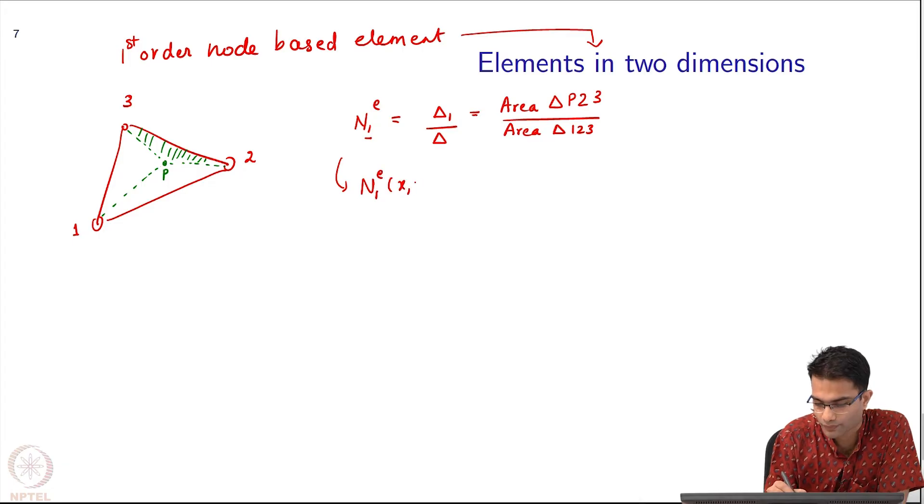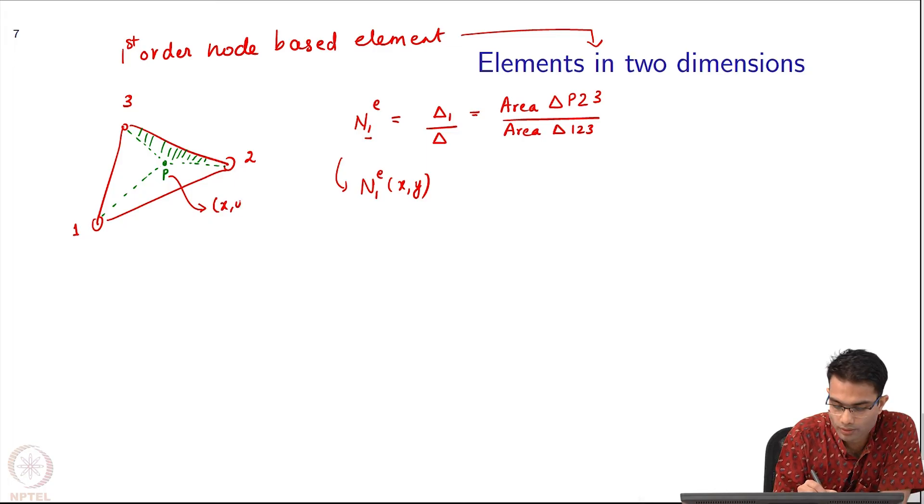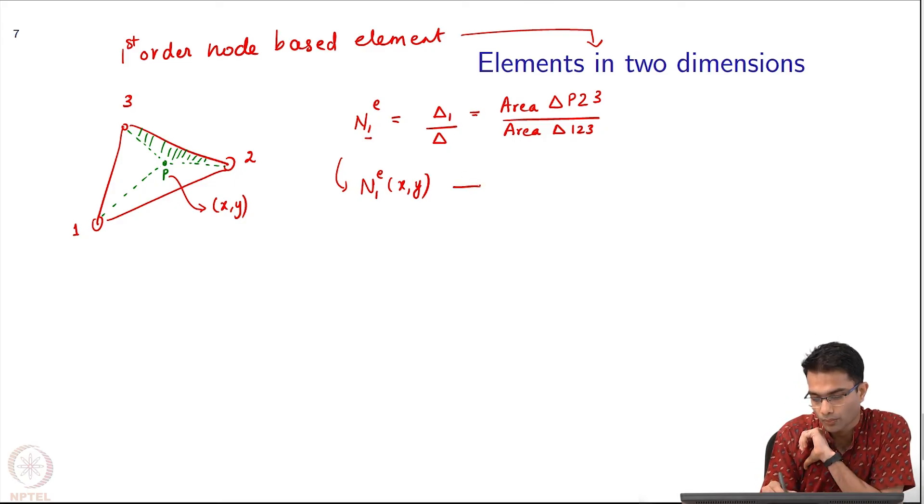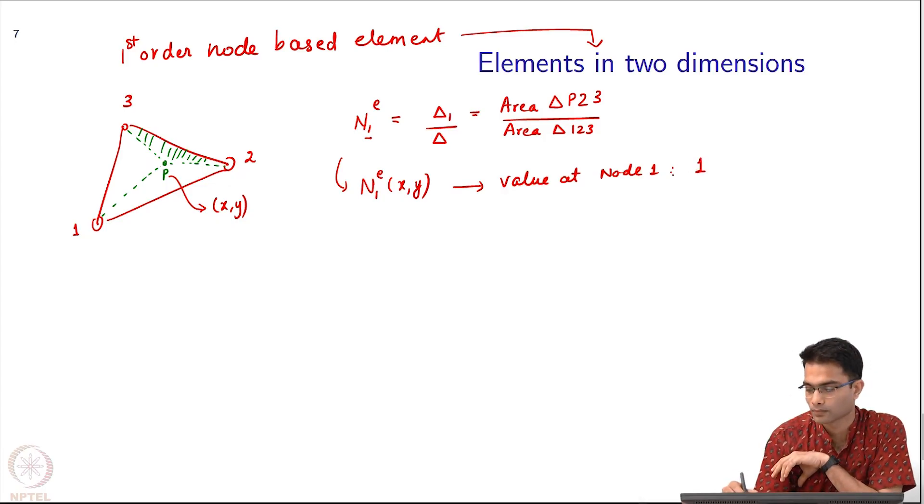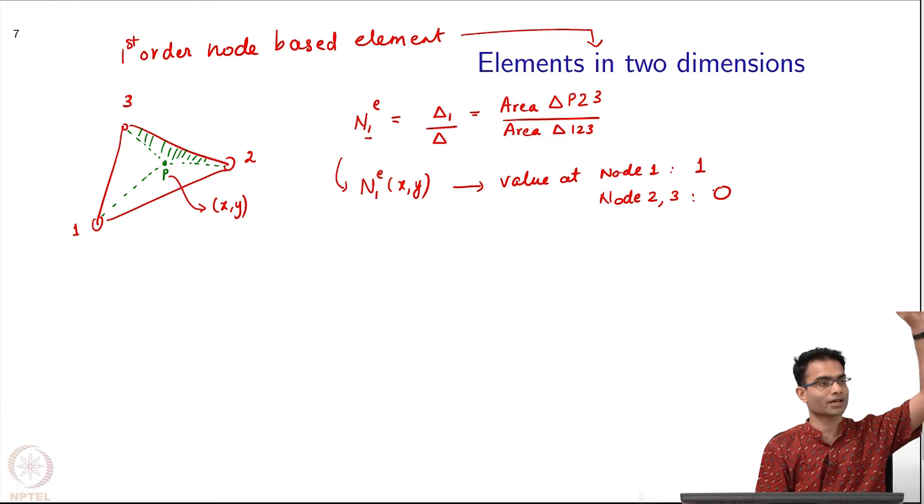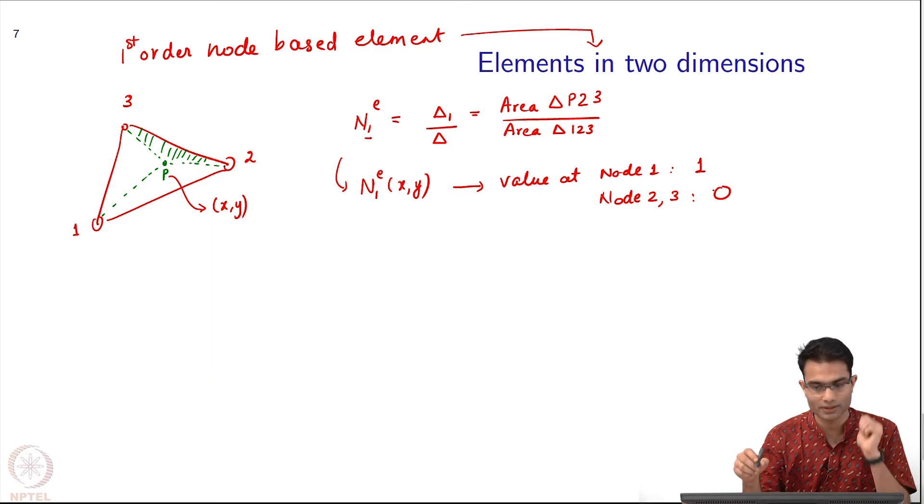Let us look at some of the properties of this function. N1 is a function of x,y because the coordinates of this point P - the node locations are fixed, P can roam around anywhere inside. As P roams around, my function N1 is now a 2 dimensional function. The coordinates will come in. What is its value at node 1? One. At node 2 and 3? Zero, right - the triangle falls flat. This is like that Lagrange polynomial of the first order case - it had its value 1 at its own location and 0 at the other nodes.